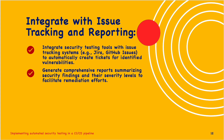Next is integrate with issue tracking and reporting. Integrate security testing tools with issue tracking systems like Jira, GitHub and Azure DevOps to automatically create tickets for identified vulnerabilities. Generate comprehensive reports summarizing security findings and their severity levels to facilitate remediation efforts.